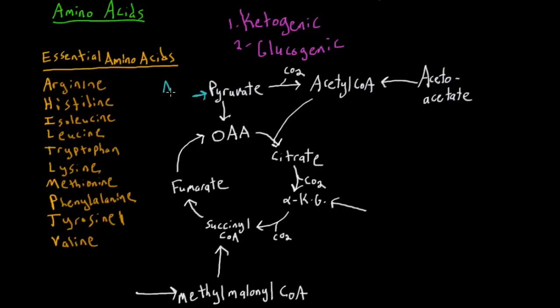Amino acids like alanine, serine, glycine, threonine, and cysteine can all be degraded into pyruvate. Of course these reactions can be reversed as well, so we can create these amino acids from pyruvate. These would be considered glucogenic because we break down glucose into pyruvate.